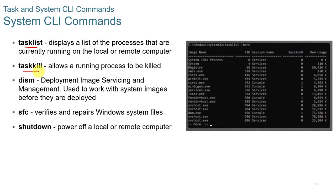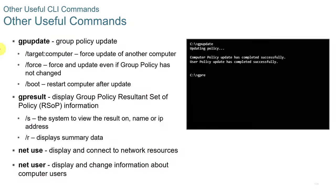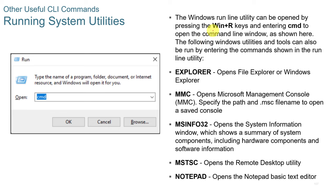Additional command-line utilities include: tasklist, taskkill, DISM (Deployment Image Servicing and Management, used to work with system images before deployment), SFC (verifies and repairs Windows system files), shutdown, gpupdate (group policy update), gpresult (displays group policy resultant set), net use (displays and connects to network resources), and net user (displays and changes computer user information). The Windows Run utility (Win+R) can also open tools such as Explorer, MMC, MSinfo32, MSTSC (remote desktop), and Notepad.